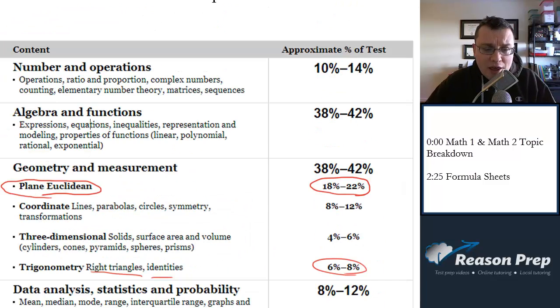Whereas algebra, this one for Math 1 basically goes up to algebra 2. So simpler functions, quadratics, some polynomials, rational, some exponential, but nothing too crazy.